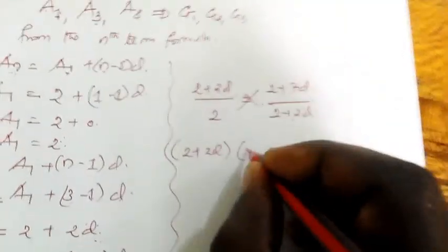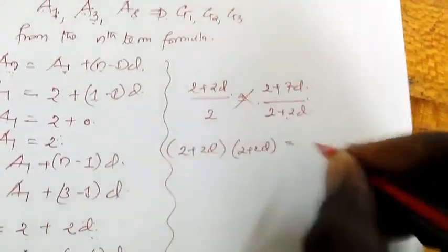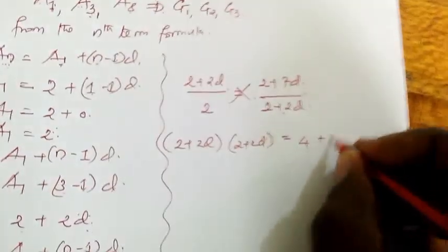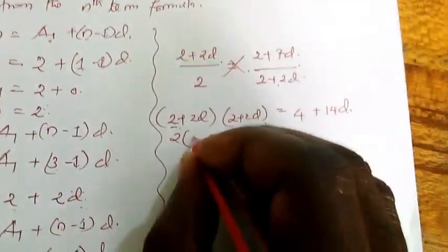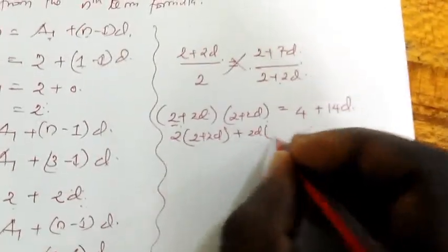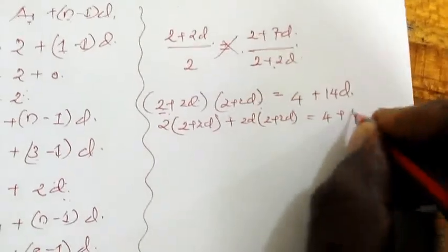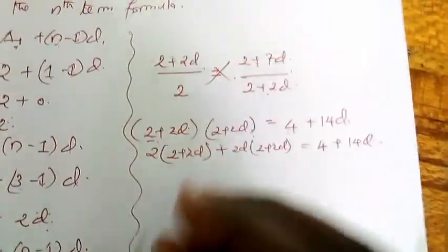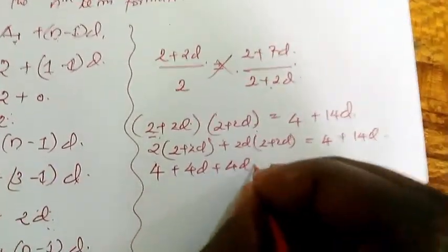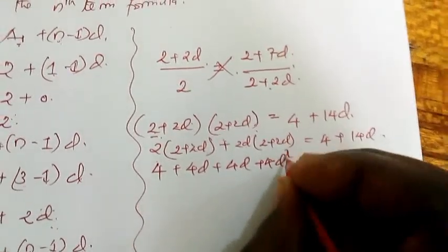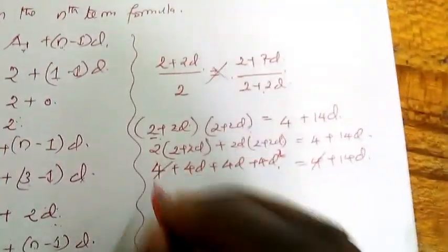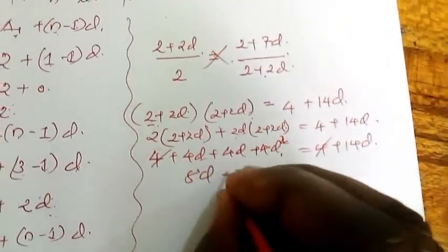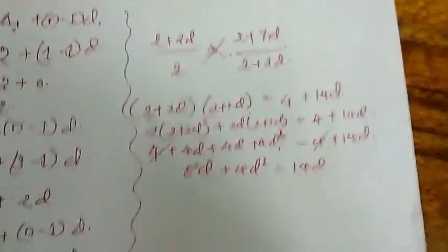After that, you start substituting. Where there's G2, we take the term for G2. Instead of writing G2, after writing the formula, we write this. So it will be 2 plus 2D divided by 2. Then equals G3, which is 2 plus 7D, divided by G2, which is 2 plus 2D. Then after there, we cross multiply. You get 2 plus 2D times 2 plus 2D equals 4 plus 14D.